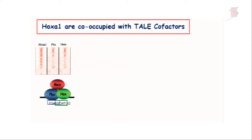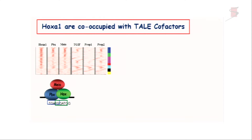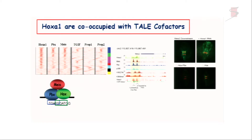We found that HoxA1 partners with its known co-factors like PBX and MEIS. But using other TALE factors like TGIF, PREP1, and PREP2, we find a variety of possible combinatorial binding codes which can delineate the 3,600 peaks into seven distinct classes. Here is one example where we tested those elements.